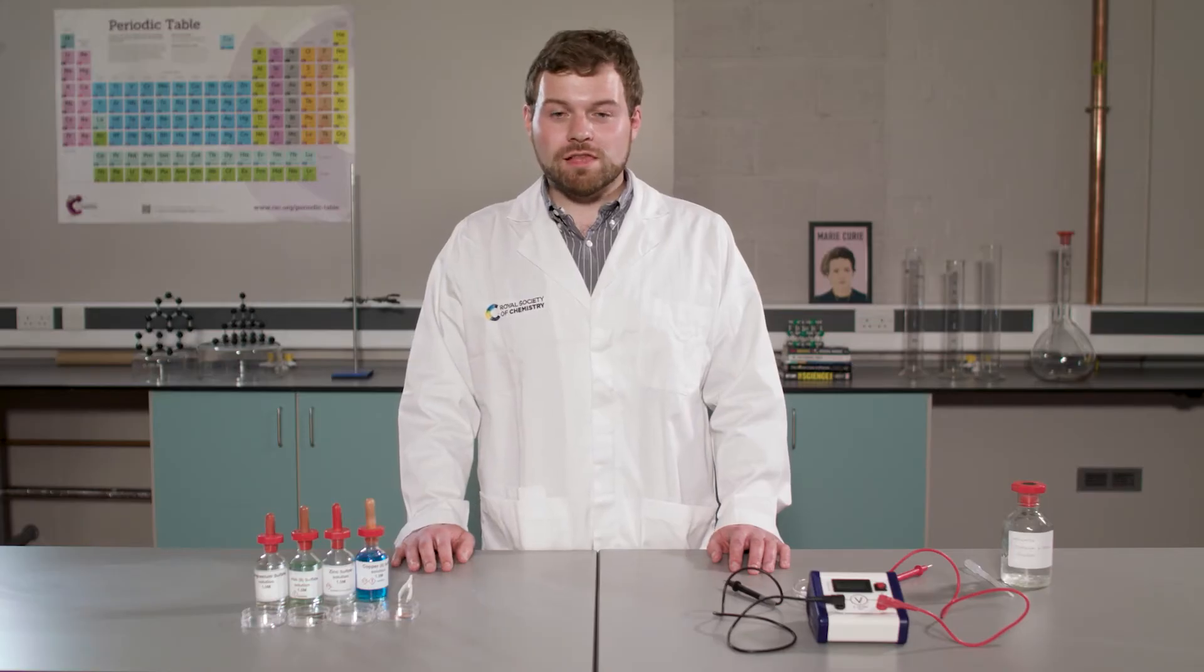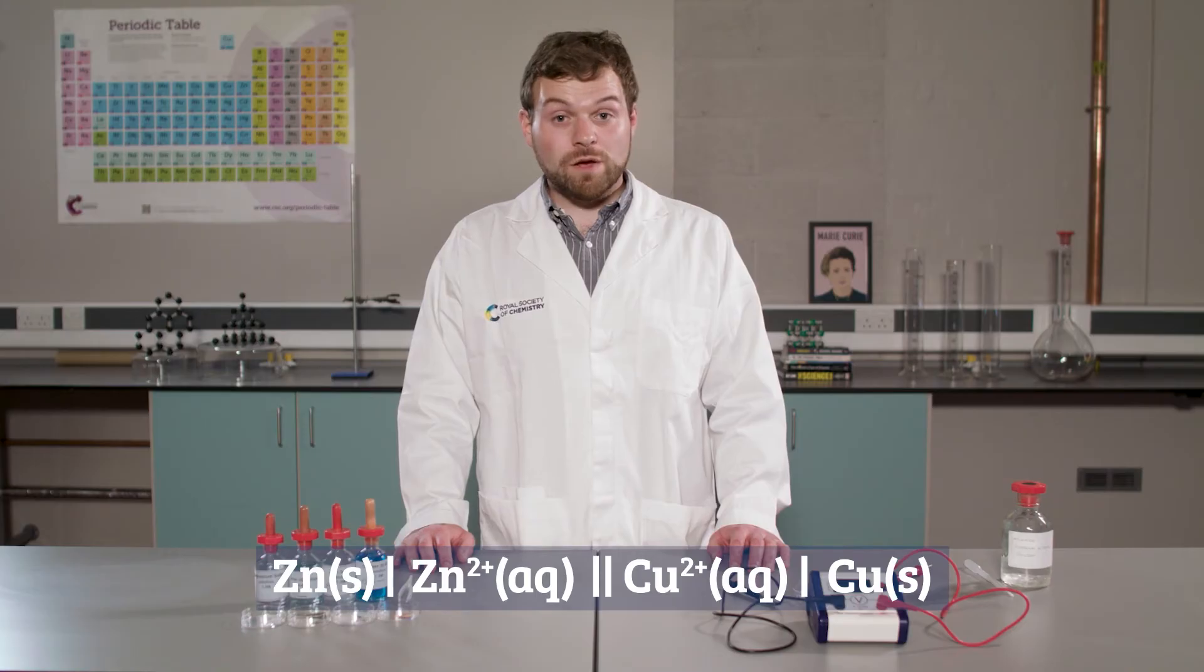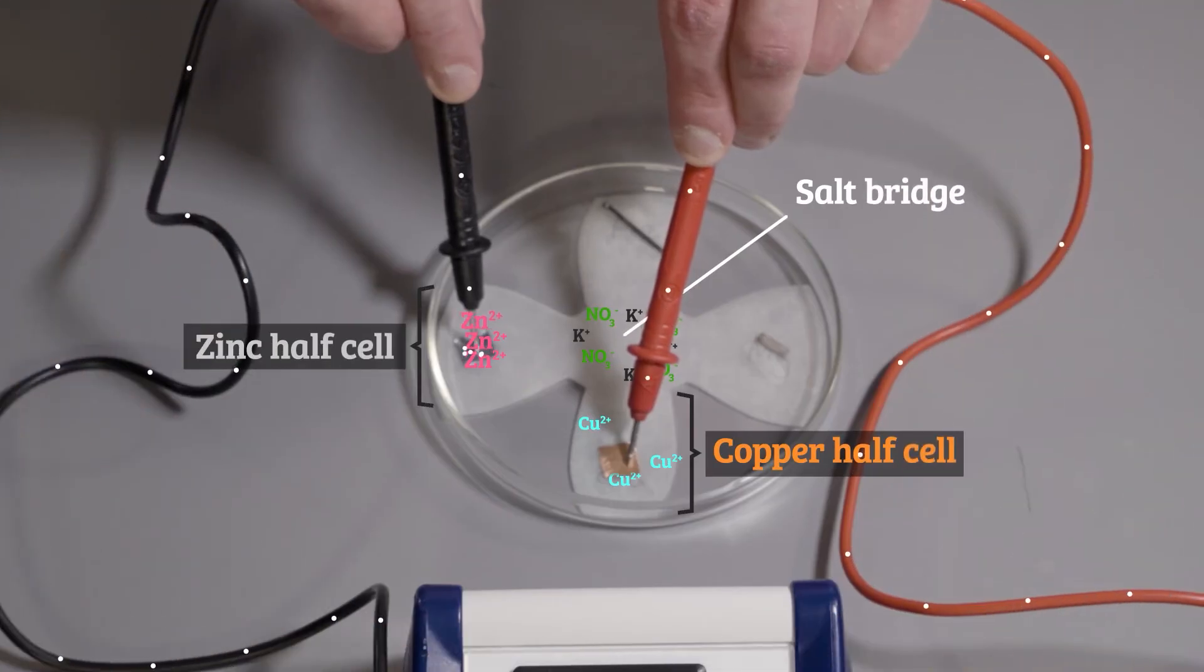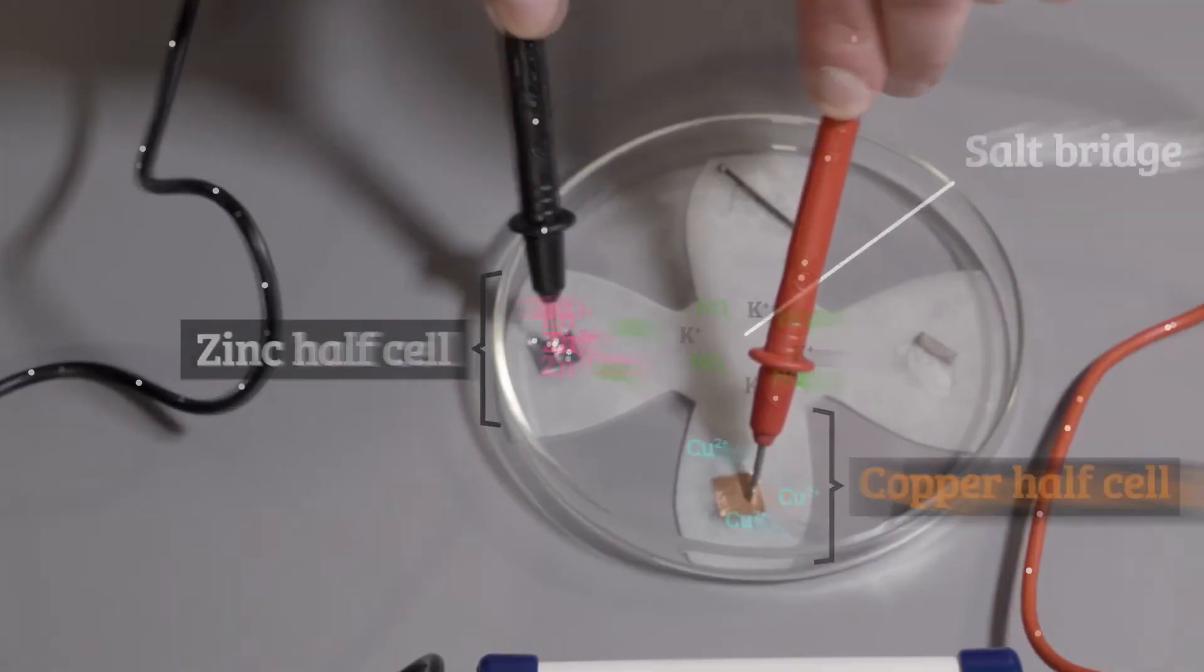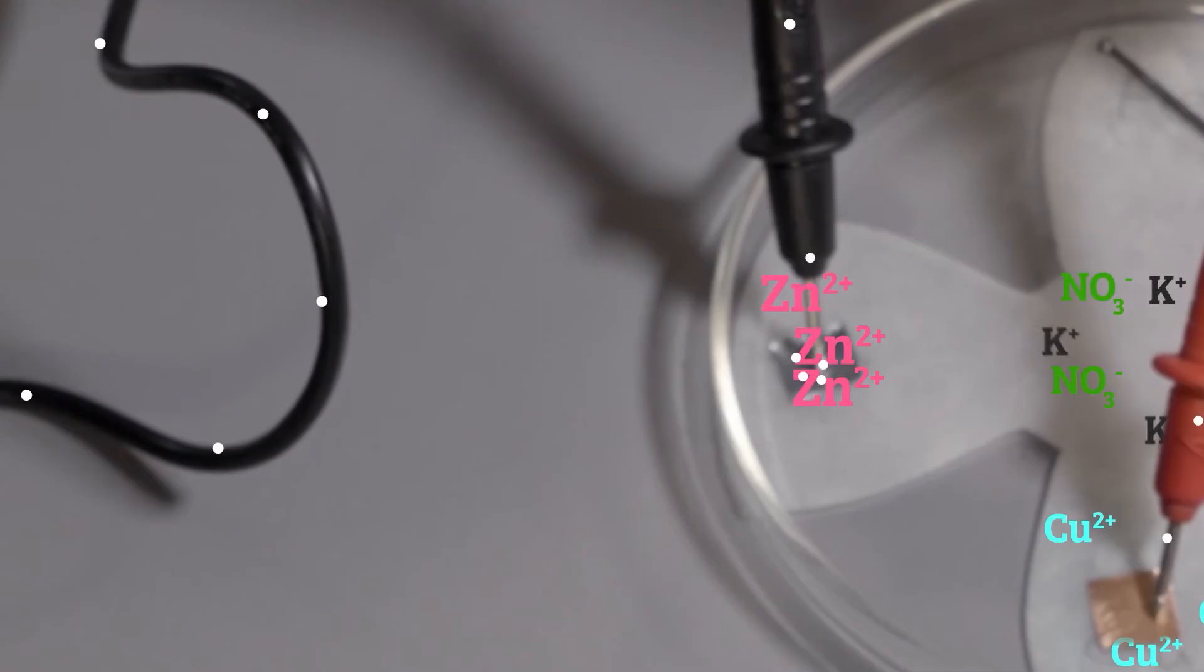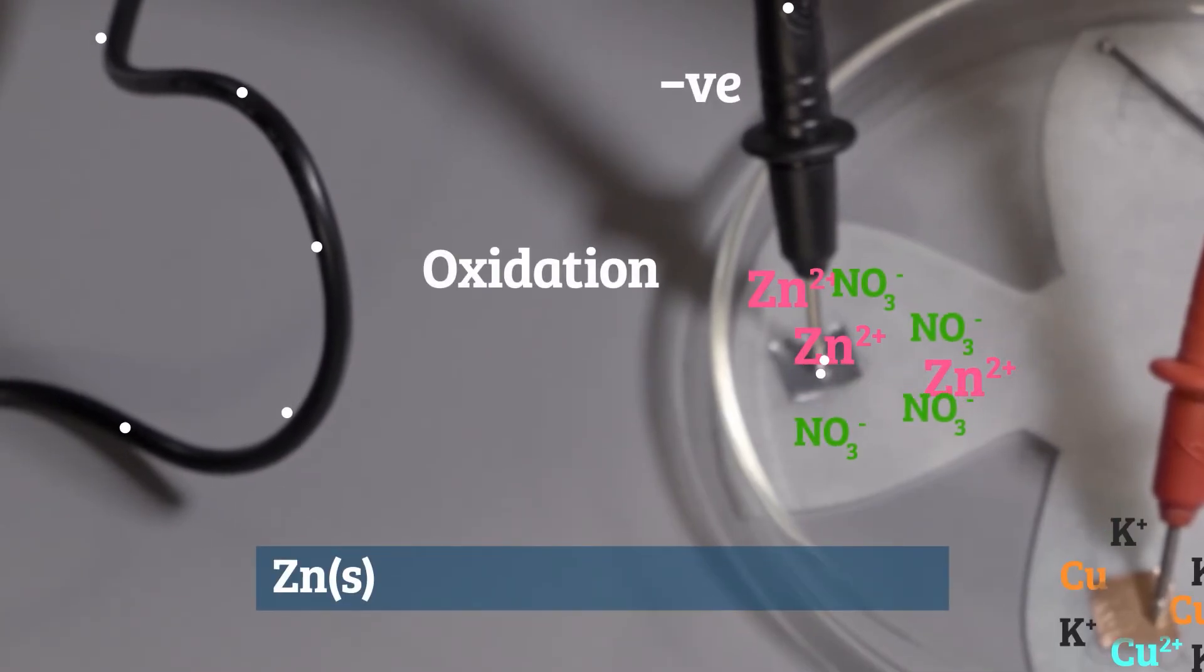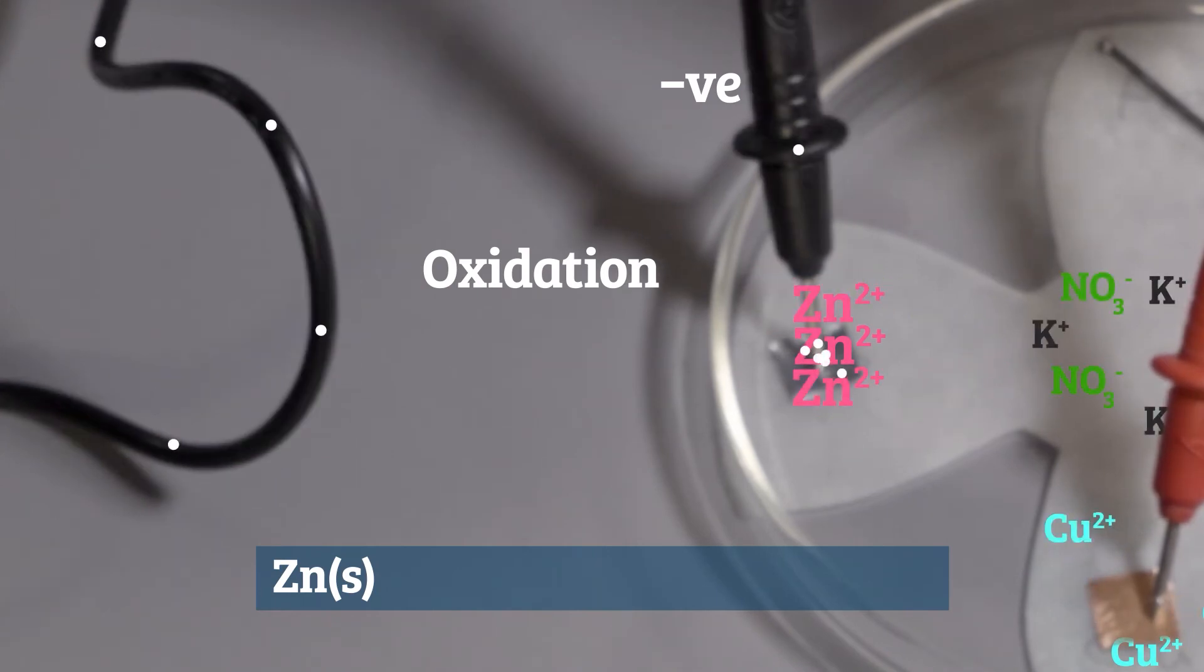In chemistry, we represent cells using a kind of shorthand, called a cell diagram, which despite its name, is not actually a diagram. We put the more negative half cell on the left, which in the case of the zinc-copper cell, is the zinc half cell. Remember the negative half cell is where oxidation is occurring, so we put the components in order of increasing oxidation state.